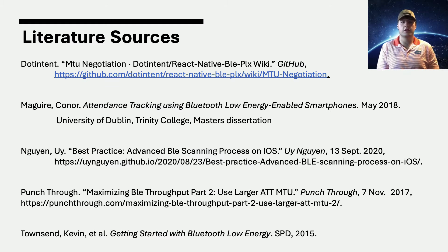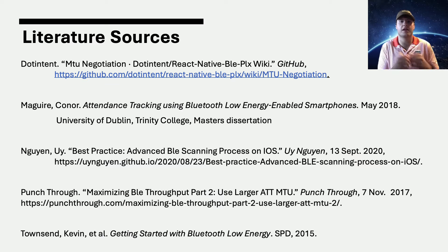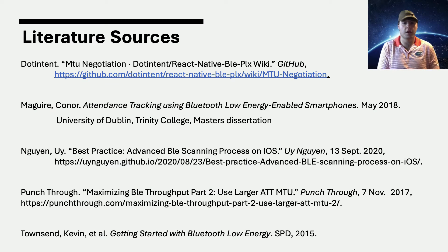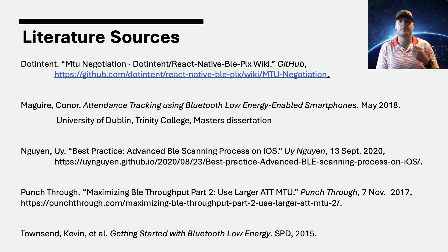The first literature source is a wiki written as part of the Bluetooth framework we used on the mobile application. The core idea is that when devices connect, they negotiate a maximum transmission unit — the total data size that a device will accept — and there are different behaviors on iOS and Android. After that initial connection, they'll try to increase the size to get as much data throughput as possible. The next piece of literature is a dissertation about an attendance tracking application using Bluetooth Low Energy, which explained a lot of BLE basics and gave creative approaches to transmitting data using advertising packets versus connecting and transmitting information directly.